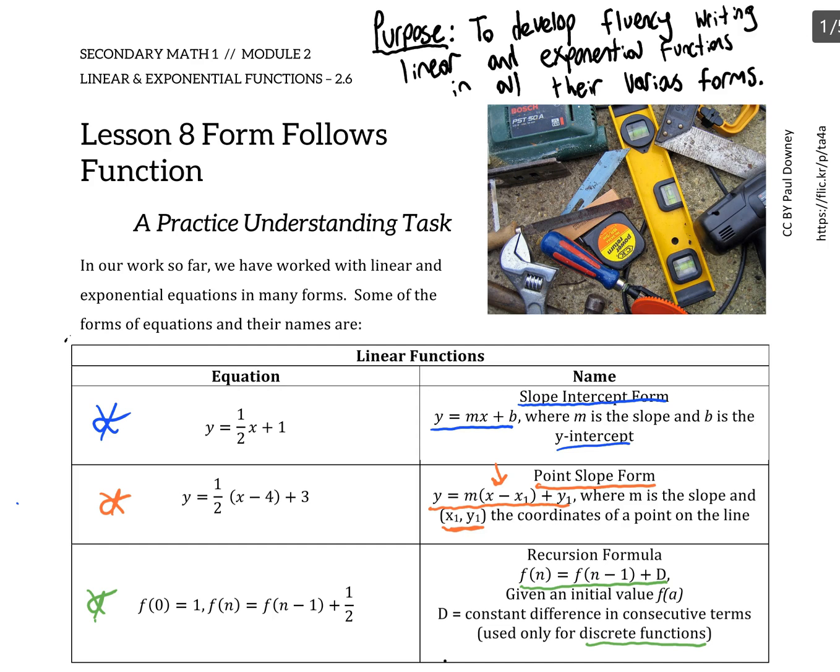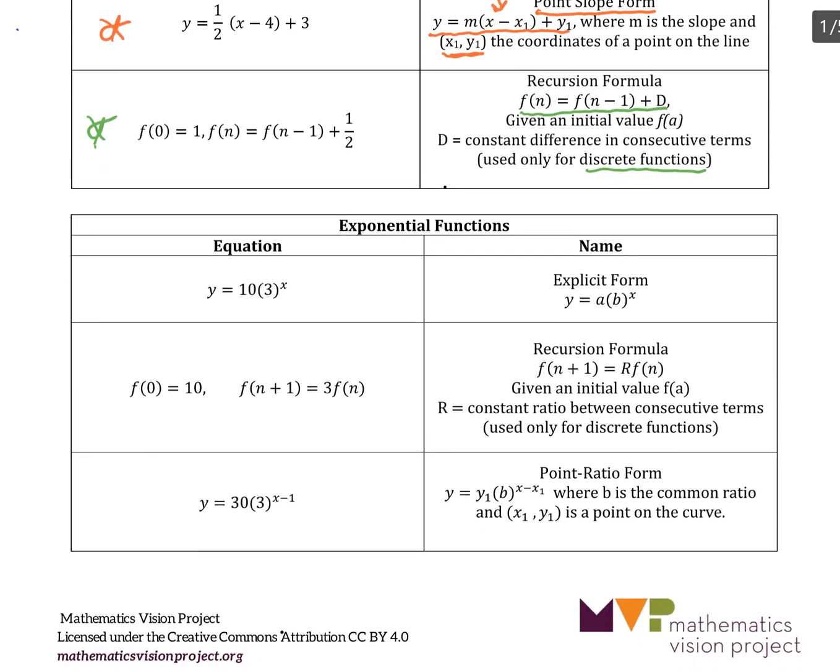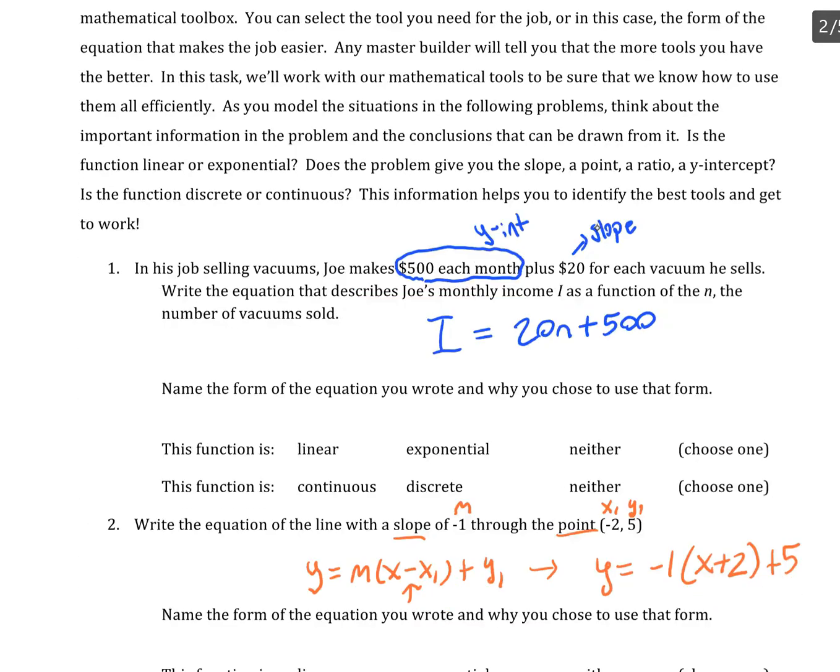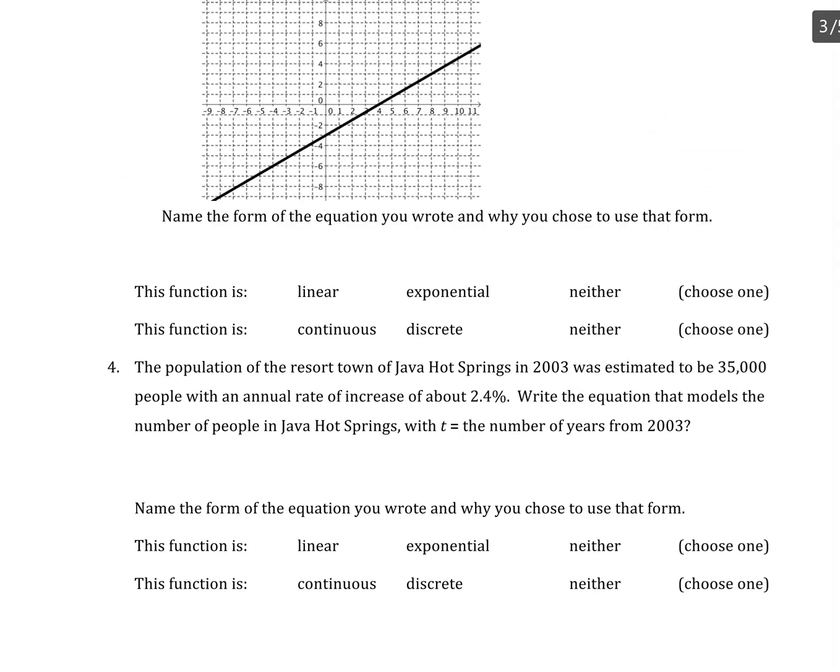Moving down now to exponential functions, we have the explicit form of an exponential function: y = a(b)ˣ. Let's look for a scenario where that's the most appropriate form to use. Problem 4: the population of the resort of Java Hot Springs in 2003 was estimated to be 35,000 people with an annual rate of increase of about 2.4%. We know we're using the form y = a(b)ˣ. A is the starting value, so in this case that's 35,000, and b is the growth ratio.